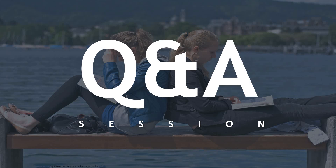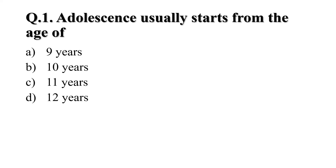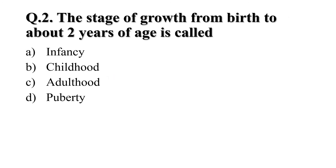Now let's revise what we have learnt today. Question 1: Adolescence usually starts from the age of — A) 9 years, B) 10 years, C) 11 years, D) 12 years. The correct answer is C, 11 years. Question 2: The stage of growth from birth to about 2 years of age is called — A) infancy, B) childhood, C) adulthood, D) puberty. The correct answer is A, infancy.